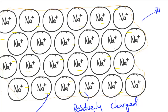Beyond electrical conductivity, another thing these electrons can convey is kinetic energy. Thermal energy can also be transferred through the jiggling and bouncing of the ions themselves, meaning heat can be very easily transferred from one part of the metal to another.